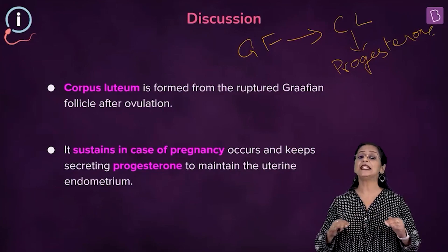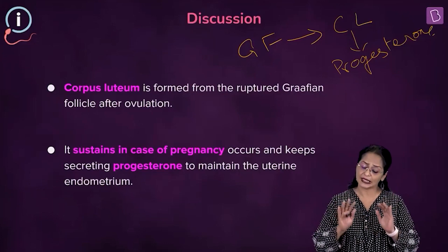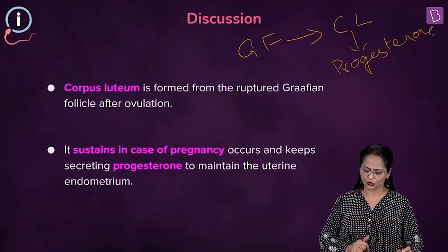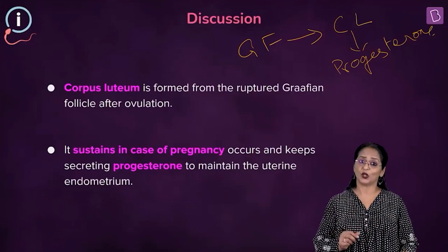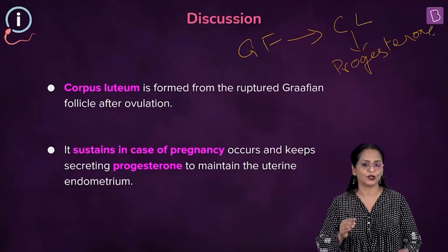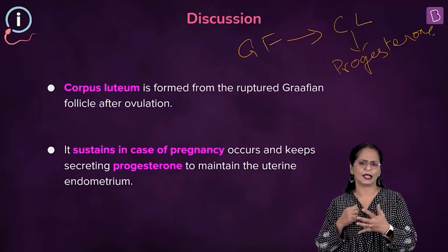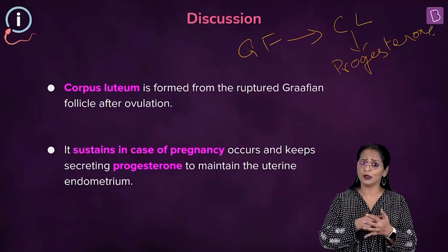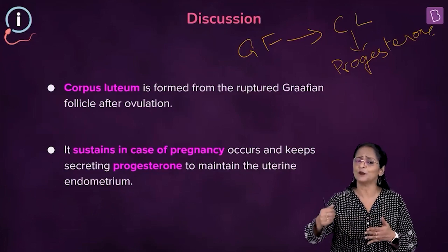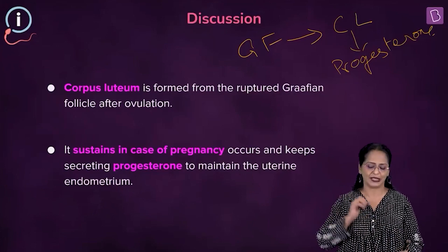Progesterone helps in maintaining the pregnancy — the entire duration of pregnancy is maintained by this hormone. It maintains the endometrium of the uterus for a possible implantation of a fertilized egg, that is the embryo, which has to be maintained throughout the period of gestation. So progesterone helps in maintaining the pregnancy.